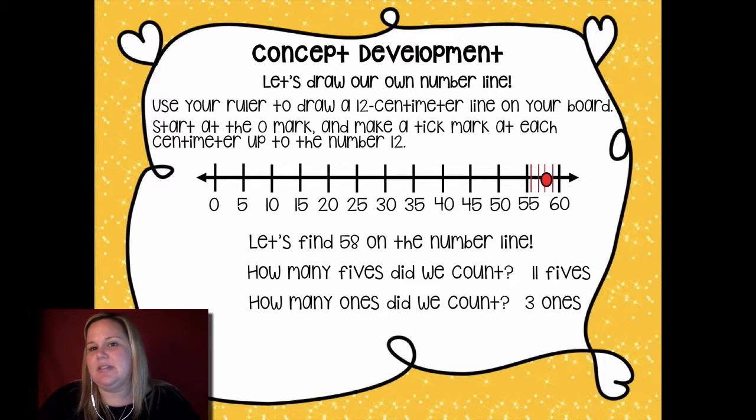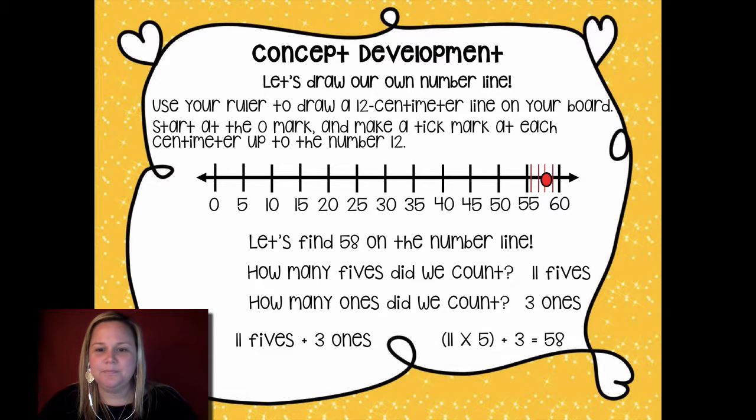So I could write this as an addition sentence. You guys want to see this? Ready? I could do 11 fives plus three ones to be able to solve this problem. Now, 11 fives, I kind of have to stop and think about that a lot, right? To be able to solve that. But you already did that because we just skip counted by fives. So I could actually write this as a multiplication sentence to maybe make it easier for me. I could write it as 11 times five because 11 times five is just skip counting by fives 11 times plus those three ones, which gives me 58. So check that out, friends. We're using multiplication and a number line and time all in one problem.